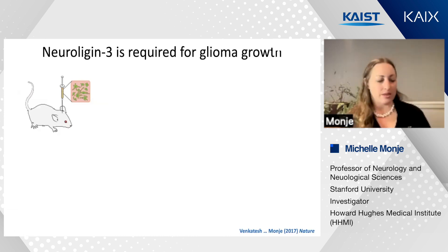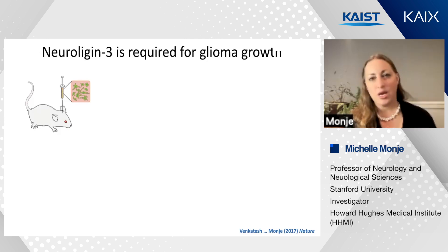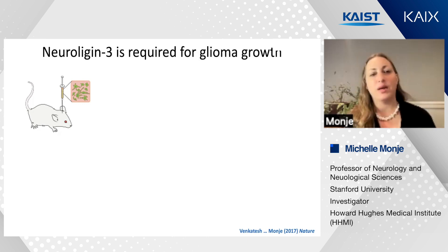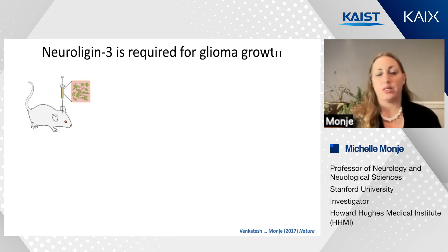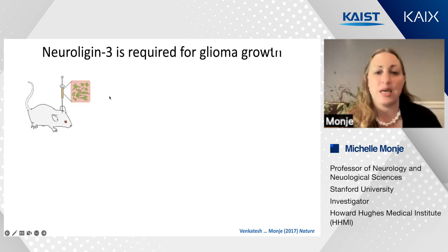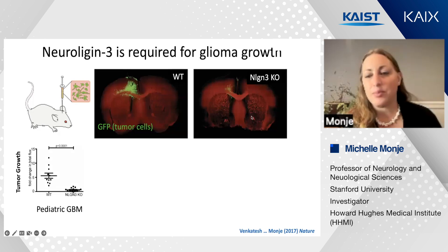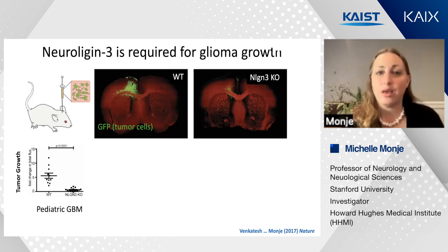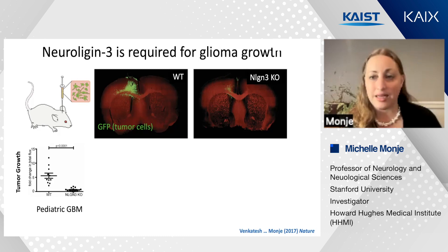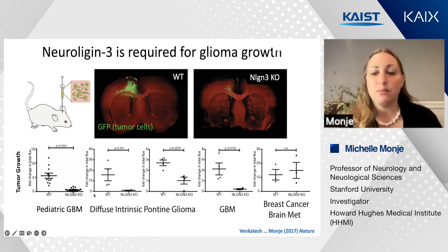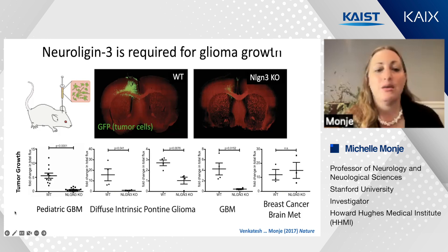How important is this mechanism of activity-regulated neuroligin-3 shedding? There are many cell-intrinsic mechanisms by which glioma cells grow, as well as other microenvironmental mechanisms. To assess the relative importance, we simply xenografted brain cancer cells into either neuroligin-3 wild-type or neuroligin-3 knockout brains. Rather than just slowing in their growth, these tumors utterly stagnated in the absence of neuroligin-3 from the tumor microenvironment. This was true across multiple different forms of glioma in multiple brain regions, including both pediatric and adult forms of glioblastoma, and diffuse midline gliomas xenografted either to the pons or the cortex.